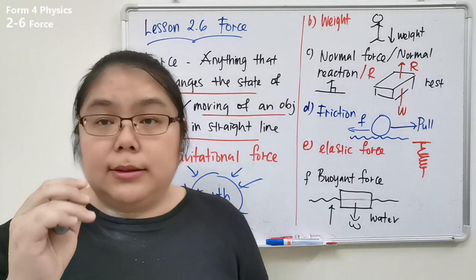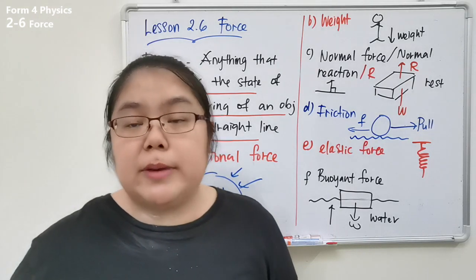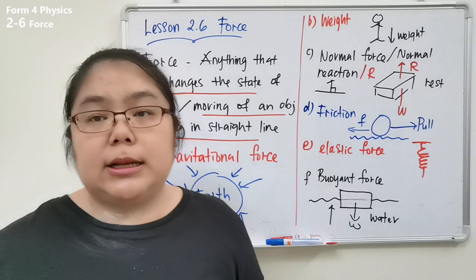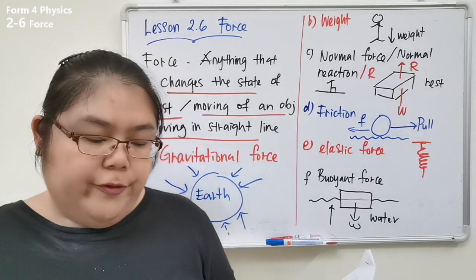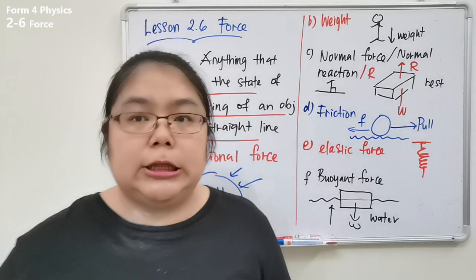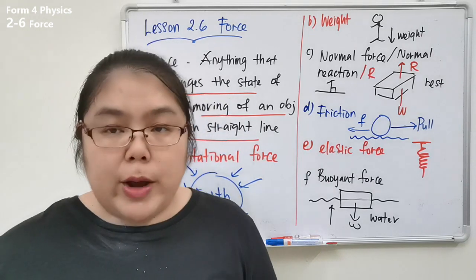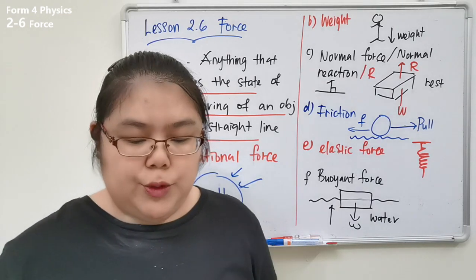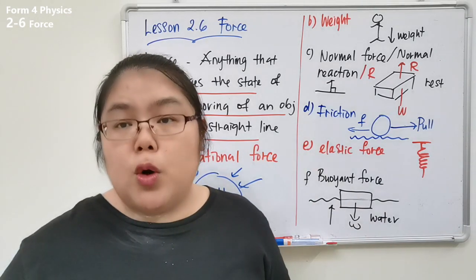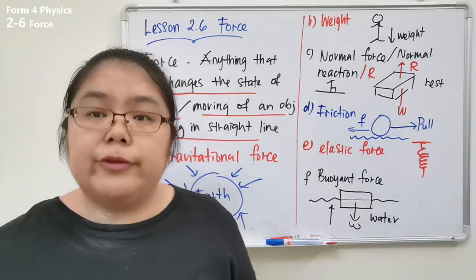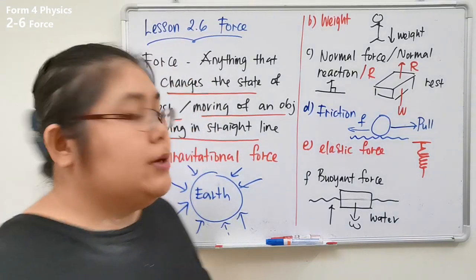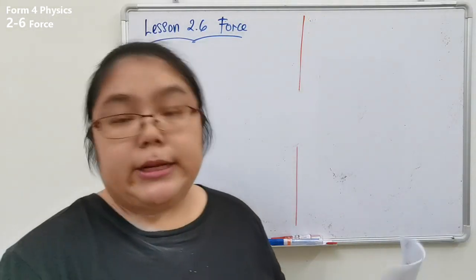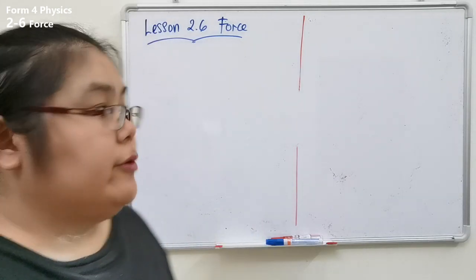All these are examples of forces — different names but the same type. Now let's look at the characteristics of force. Force is a vector quantity, meaning it has both direction and magnitude. We also need to know the unit for force. Let me clean the board first.